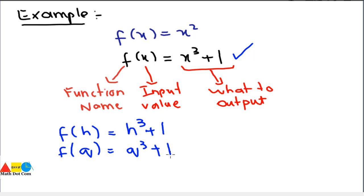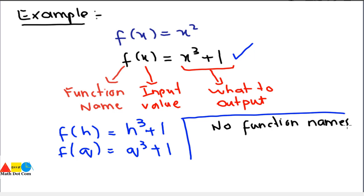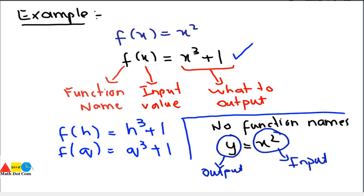We can find ordered pairs from these algebraic functions by taking random values of x and finding the corresponding values of y — we will see this in the next lectures. Sometimes if there is no function name, we can write the function as y = x², where y is the output and x is the input. They are related by squaring: if we take the square of the input we get the output.